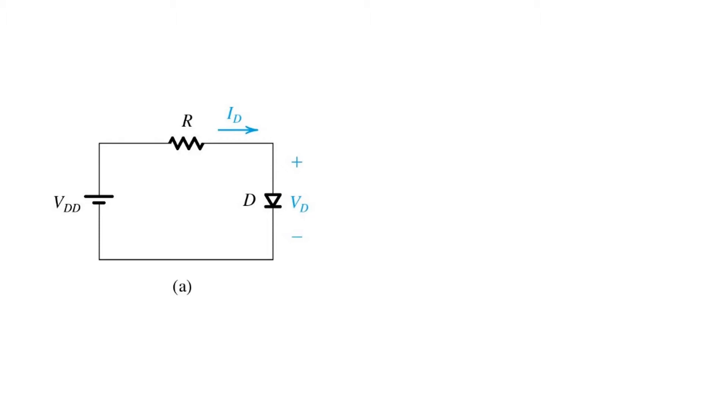Using that model, we would redraw the circuit, replacing the forward-conducting diode D by a constant 0.7 volt drop. We can then solve for the current ID, simply recognizing that it's the voltage across that resistor divided by the value of the resistance R.